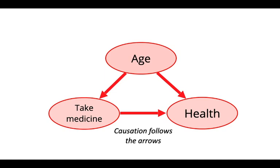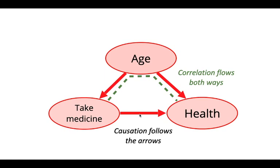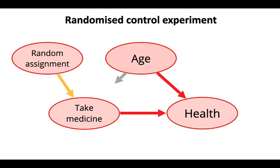Correlation follows the arrow. We're interested in the effect of taking medicine on health, but there's a correlational path between taking medicine and health through age. If we were to observe taking medicine and people's health without doing something about this causal path, we're not sure whether the observed relationship is really just the causal effect or partly the correlational effect through this other path. If we randomly assign who takes the medicine versus placebo, that would break the association between age and whether you're really taking the medicine, allowing us to measure the effect of taking medicine on health.